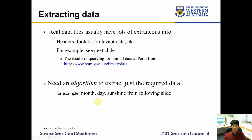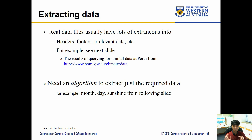Real data files usually have a lot of external information — for example, headers, footers, and irrelevant data that you might not need for data processing. For example, you can get rainfall data for Perth from this website, and basically what we need to do is use an algorithm that extracts just the required data. Out of all the information, what we're particularly interested in would be the month, day, and rainfall.